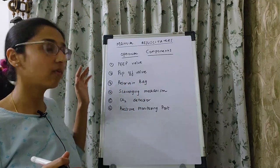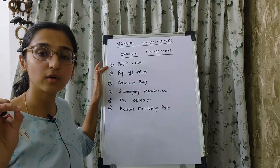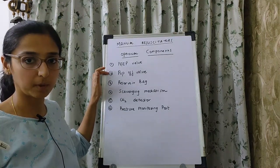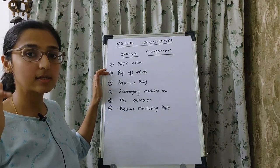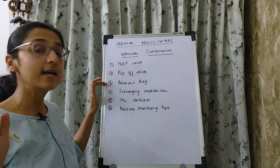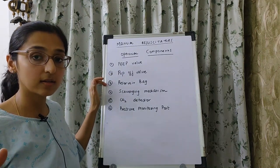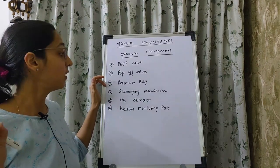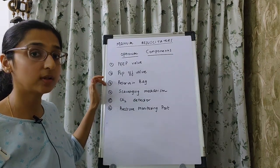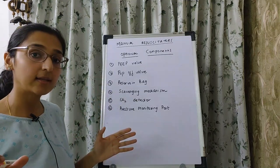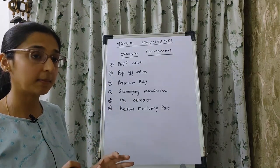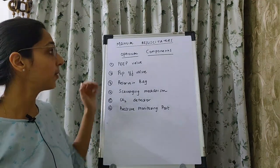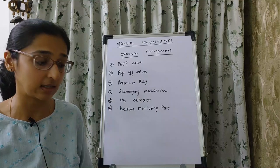Optional components of a manual resuscitator include a PEEP valve, a pop-up valve, a reservoir bag, a scavenging mechanism, CO₂ detection, and a pressure monitoring port. In this resuscitator, there is no pop-up valve and no PEEP valve, as these are optional. The reservoir bag is also an optional component.